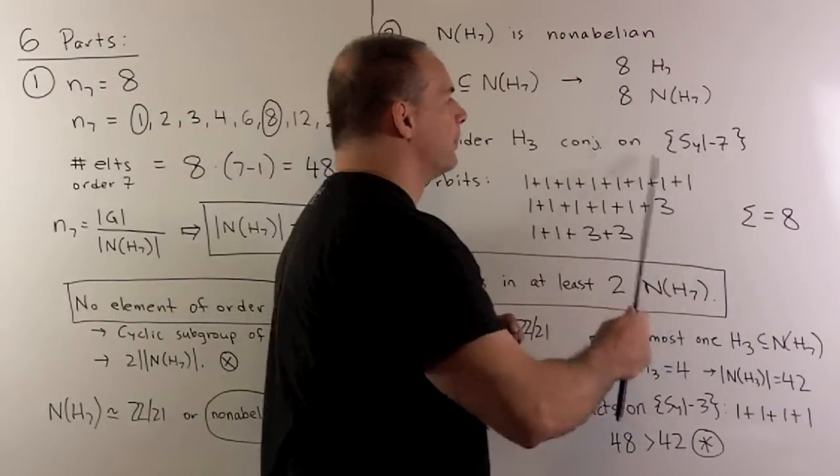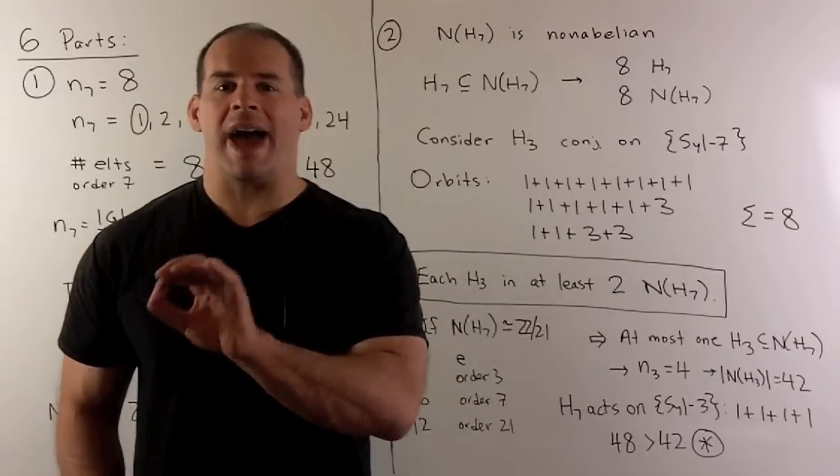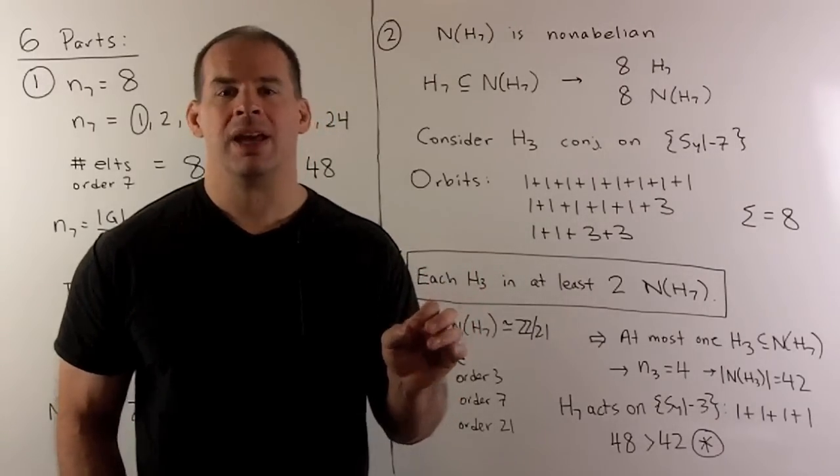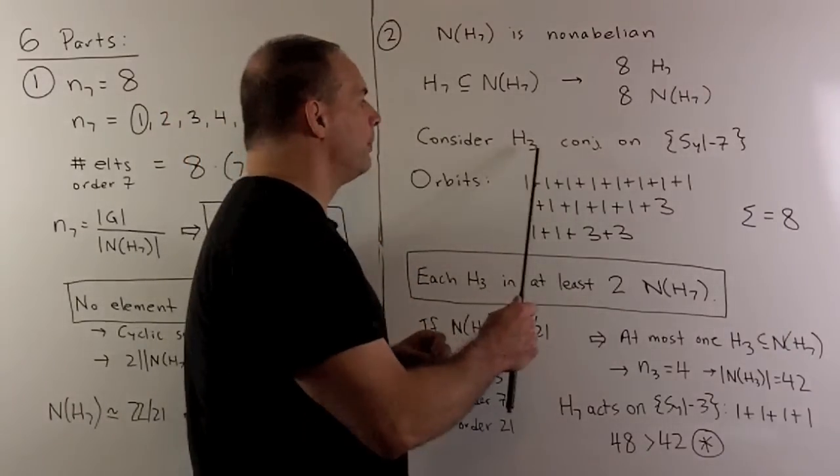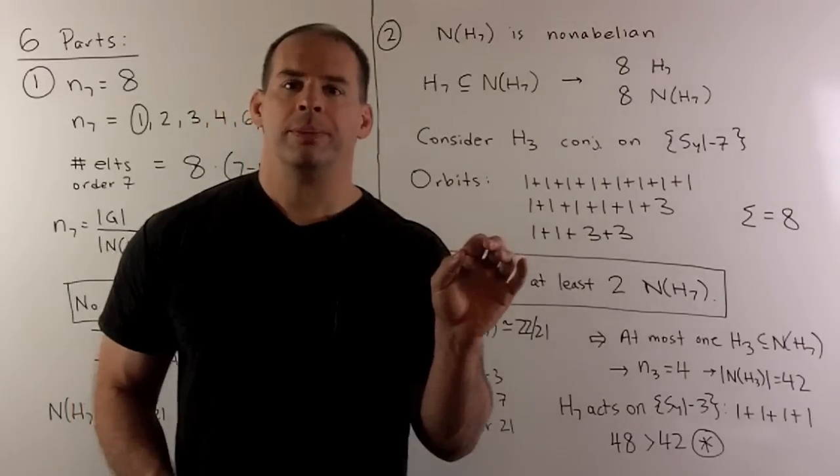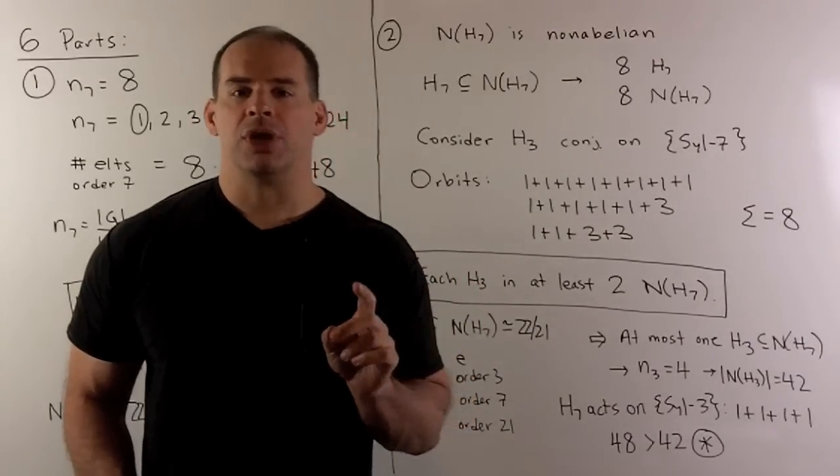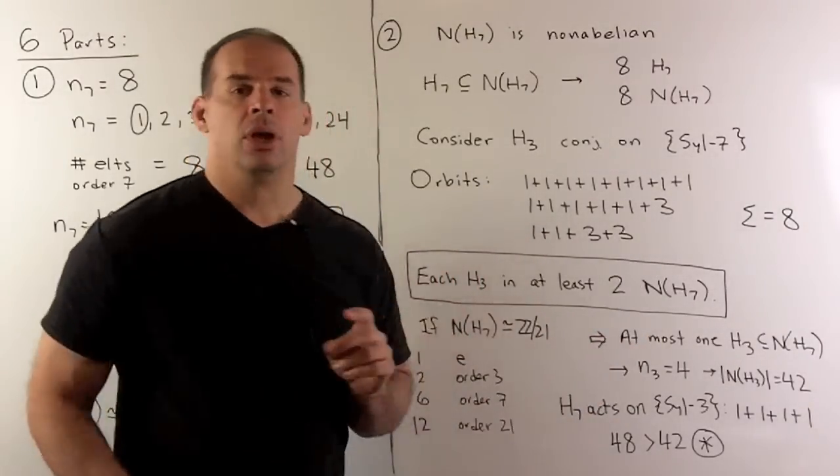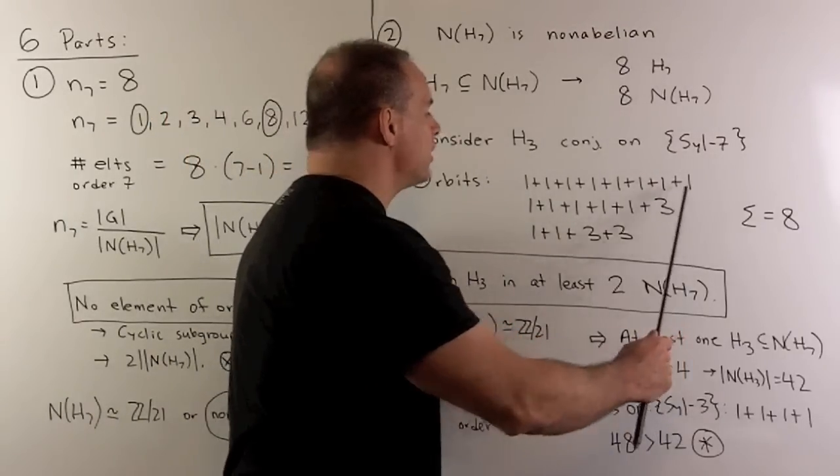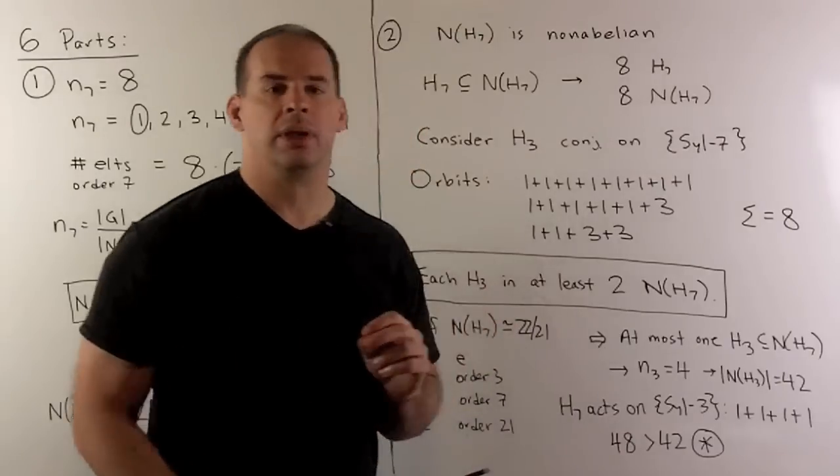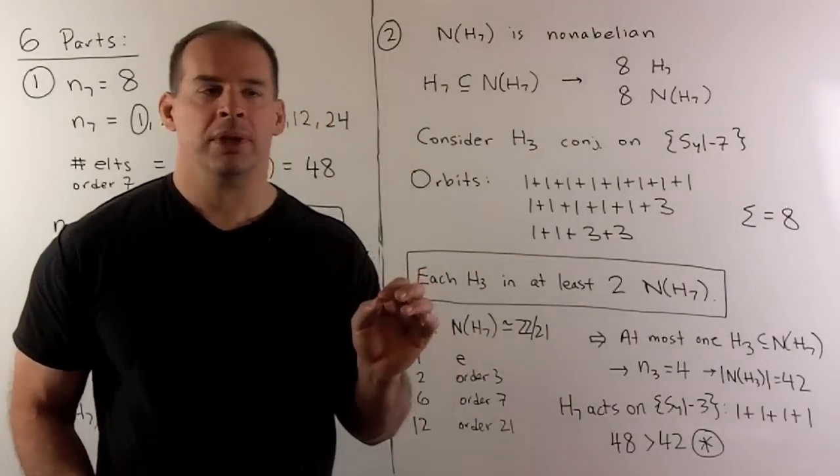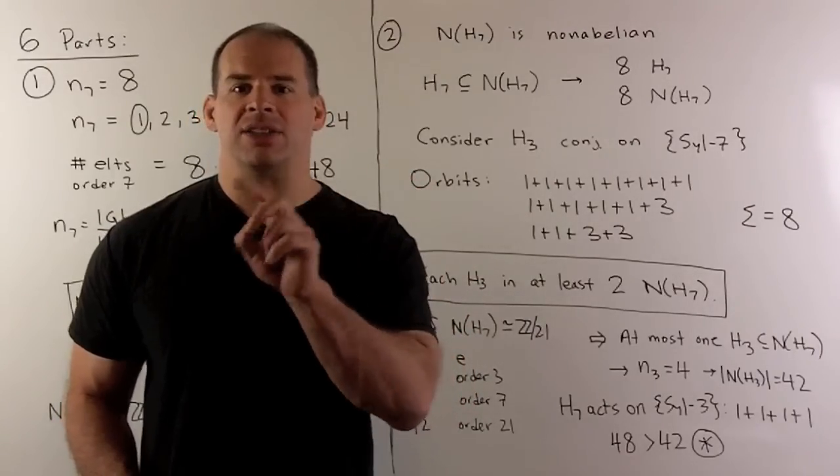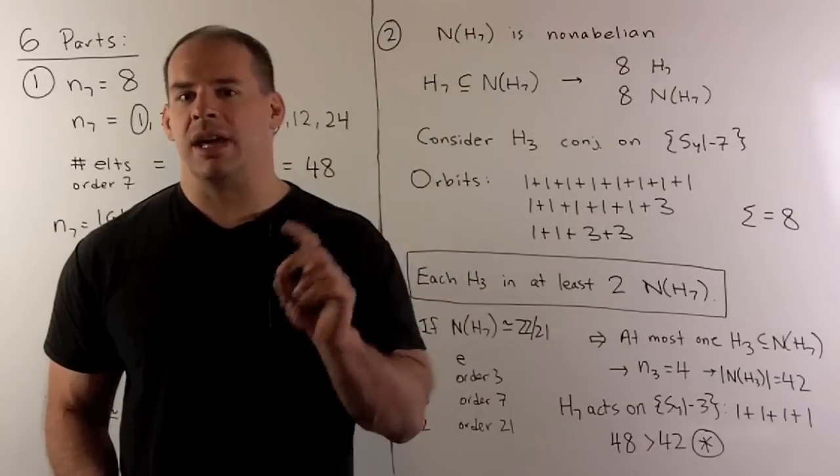Now, if I consider the Sylow 7s as a set of eight points, our simple group acts on the set by conjugation. So, if I take the conjugate of a Sylow 7 subgroup, I get back another Sylow 7 subgroup. I can restrict that group action to a Sylow 3, which I'll call H3. Under the action with this group, the orbits are going to have one or three elements in them. So, the number of elements in an orbit has to divide the order of their group. Now, how many ways can we write eight as a sum of ones and threes? We have a sum of eight ones, a sum of five ones and a three, or a sum of two ones and two threes. In any event, we're going to have at least two ones in our sum. So, what does a one mean? A one is going to be a Sylow 7 subgroup such that our H3 acts by just sending that Sylow 7 back to itself. So, that means the H3 is contained in the normalizer of that Sylow 7.